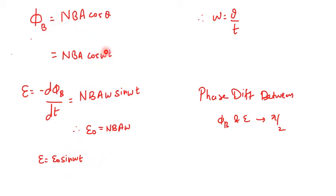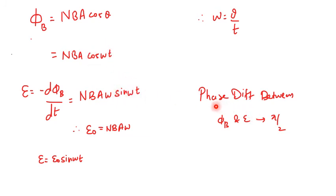Remember that in the flux equation the angle term is cos(omega·t), while in the EMF equation it is sin(omega·t). There is a phase difference of pi/2 between cosine and sine. So if someone asks what the phase difference between magnetic flux and EMF is for an AC generator, the answer is pi/2.